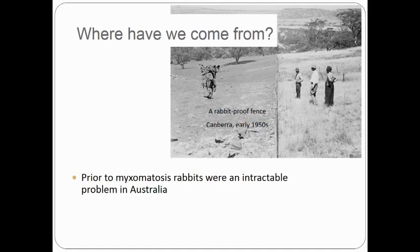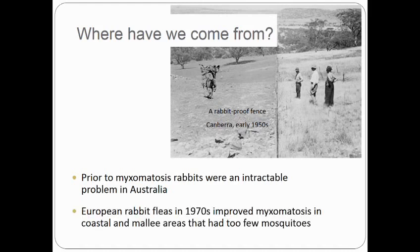They remained more or less unmanageable for a hundred years until myxomatosis was introduced in the 1950s. In some places there weren't sufficient biting insect vectors to spread myxo, and it didn't become effective in those areas until the European rabbit flea was introduced in the 1970s.